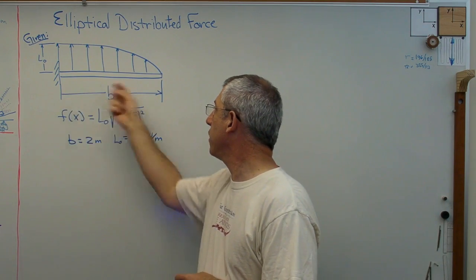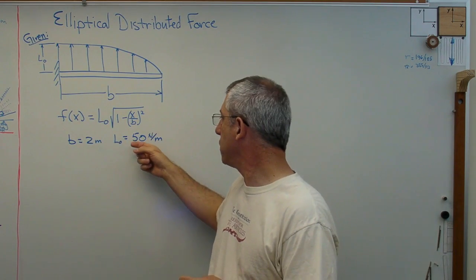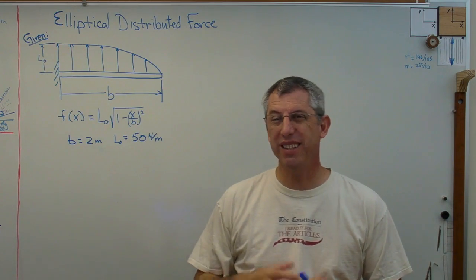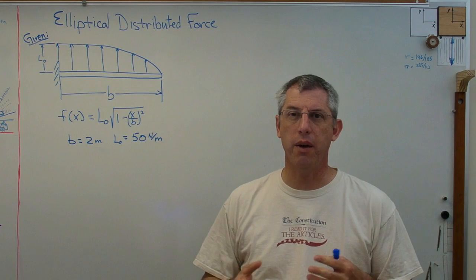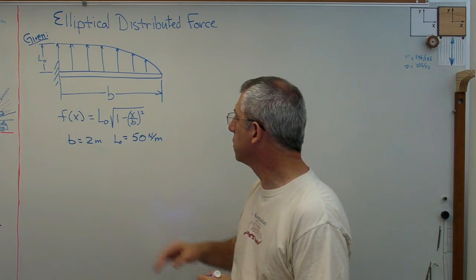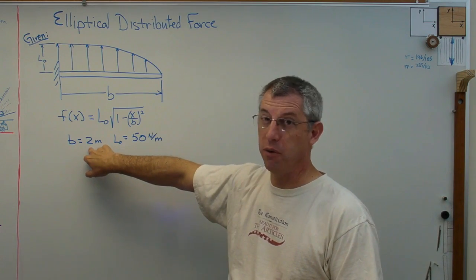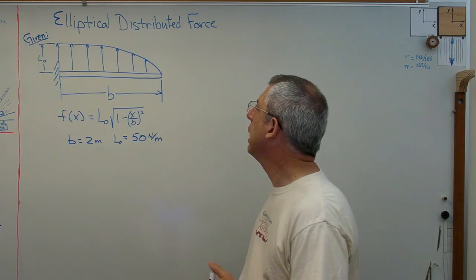Now I set the half span here, the length of the beam, to be 2 meters and the lift at the root there to be 50 newtons per meter. That sizes this for something like a UAV or radio-controlled drone. Smaller than a man-carrying aircraft probably. I don't know how you'd get a man-carrying aircraft with wings that small that would still fly.